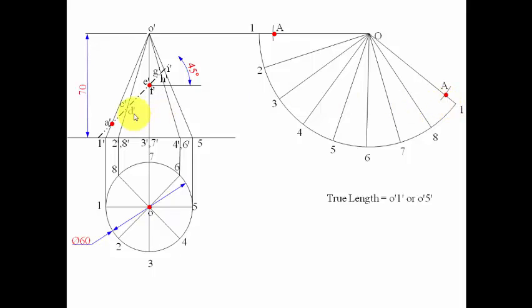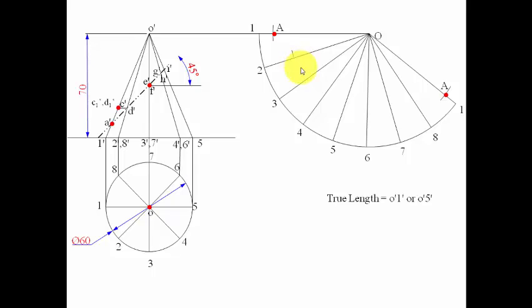For points C and D, they don't lie on the true length, so we project them horizontally onto the true length to get C1-dash and D1-dash. Using O as center and radius O to C1-dash, we cut an arc at position 2 to get point C, and at position 8 to get point D.